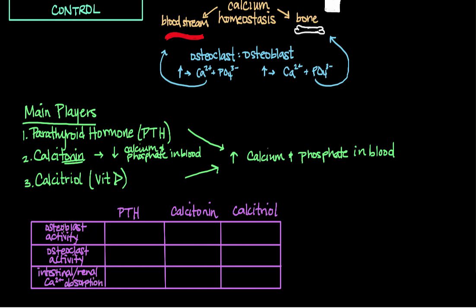Looking at osteoblast activity first: osteoblasts build up bone, so as their activity increases, calcium and phosphate are taken from the bloodstream and deposited into bone. Since parathyroid hormone increases calcium and phosphate in the blood by breaking down bone, we expect osteoblast activity to decrease as PTH increases. Similarly, calcitriol has the same overall effect, so calcitriol also decreases osteoblast activity.